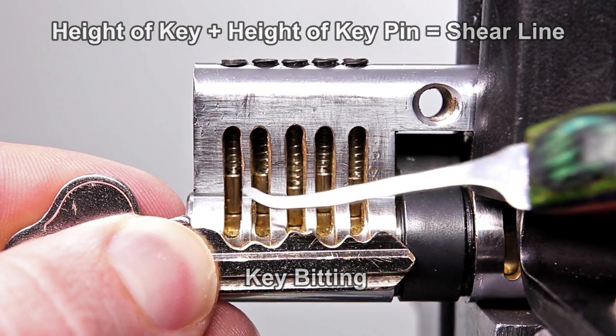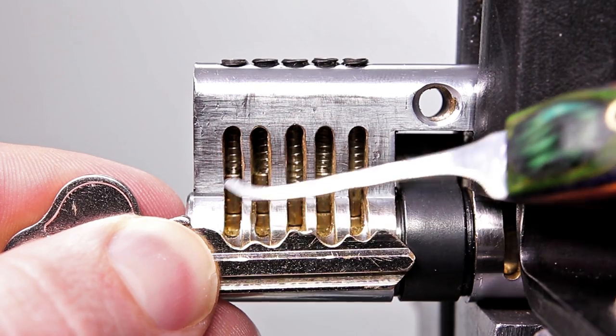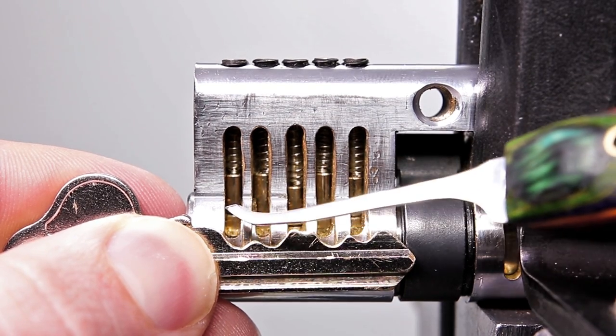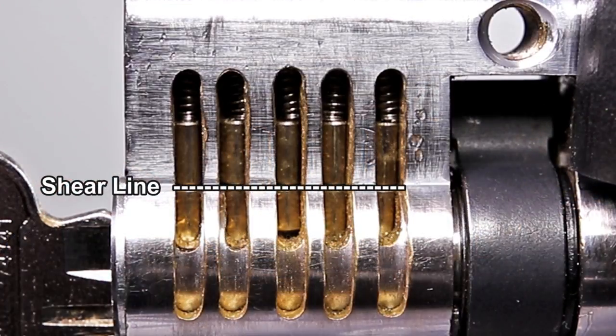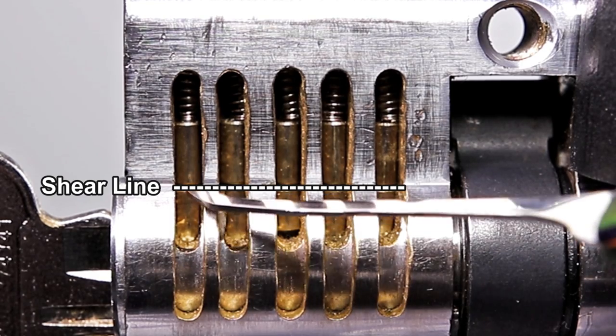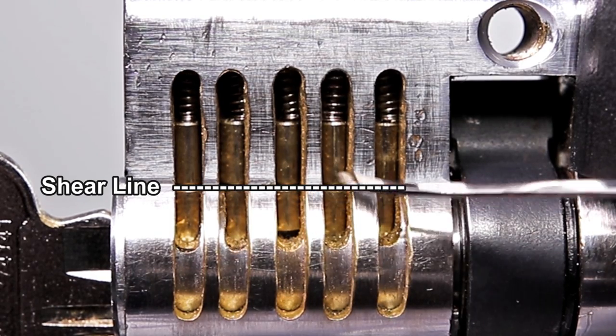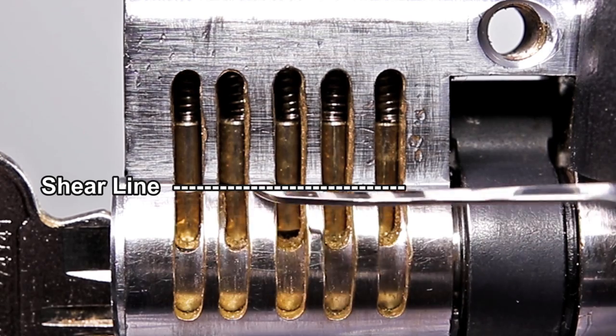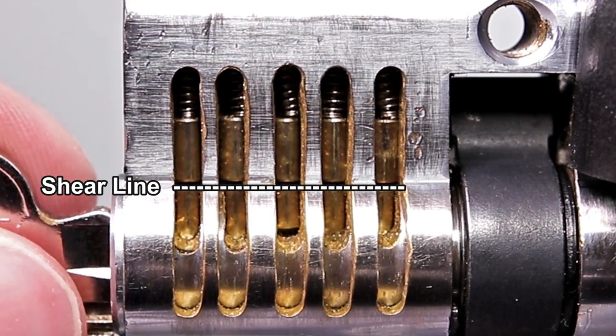The shear line is the very thin area between the bible and the plug where all the key pins are lifted up to the very top of the plug. They sit flush, they push all the driver pins up and out of the way, and the lock will no longer be obstructed and you'll be able to open it right up.